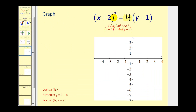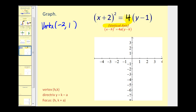The first thing we should notice about this equation is the x part is being squared, therefore we're going to have a vertical axis. Next we should be able to determine the coordinates of the vertex by looking at this equation. Remember the vertex has the coordinates (h, k), so if we see x plus 2, the x-coordinate would be negative 2, and if we see y minus 1, the y-coordinate would be positive 1. If we can determine the value of a, we should be able to determine the coordinates of the focus as well as the equation of the directrix. Well, 4a is equal to 4, therefore a is equal to 1.